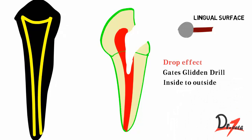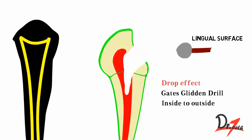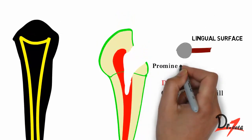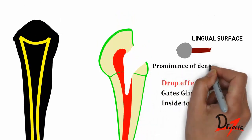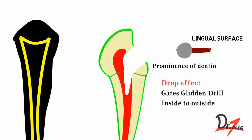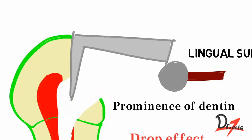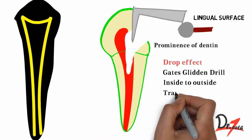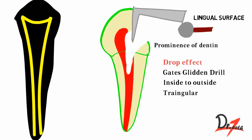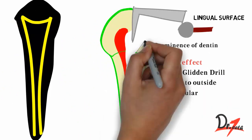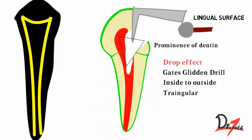The lingual shoulder is a prominence of dentine created when the lingual roof is removed. By removing both the lingual roof and the lingual shoulder, direct access to the apex of the root is achieved. This is verified by placing the straight end of an explorer into the canal opening. For the maxillary central incisor, the access cavity shape is slightly triangular with the base of the triangle toward the incisal edge.